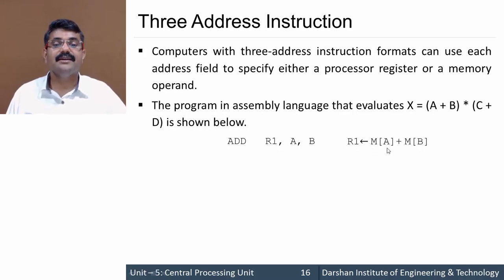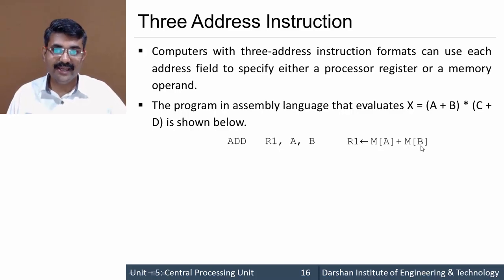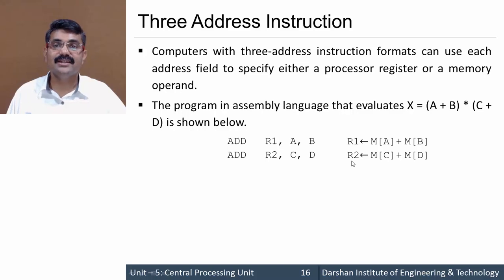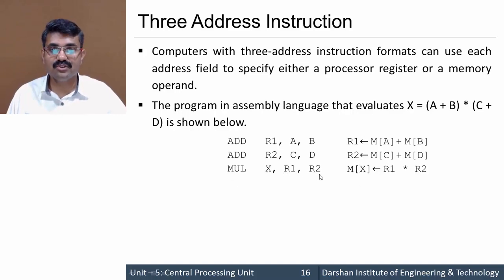The corresponding RTL (Register Transfer Language) is: R1 ← M[a] + M[b], meaning the content stored in memory at address a is added with the content at address b, and the result is stored in R1. Similarly for c + d, we write ADD R2, c, d, so R2 ← M[c] + M[d]. Now R1 contains a + b and R2 contains c + d. We then multiply: MUL x, R1, R2, storing the result at x.